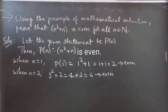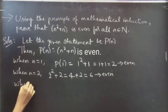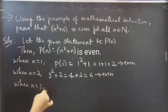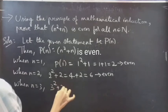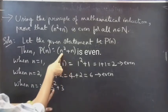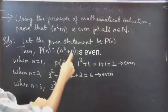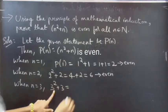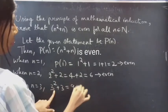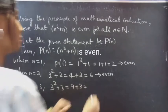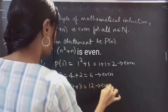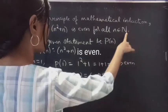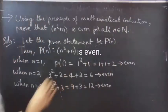Likewise, when n equals 3, we get 3 squared plus 3, which equals 9 plus 3 equals 12. Since 12 is also an even number belonging to natural numbers, and so on.